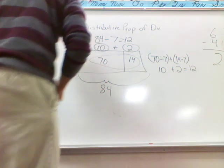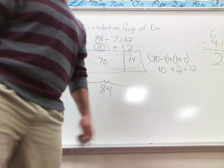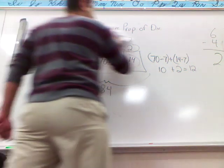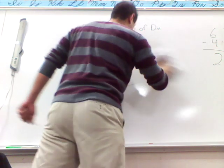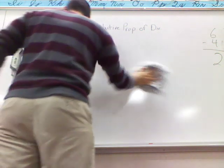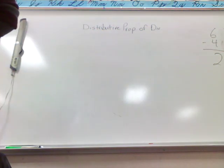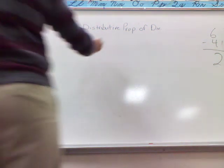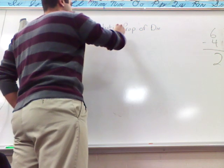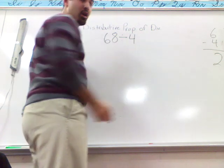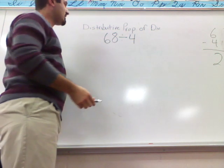All right, we can do one more for the distributive property of division. We can do one we previously did. 68 divided by 4. Now we did 68 divided by 4.